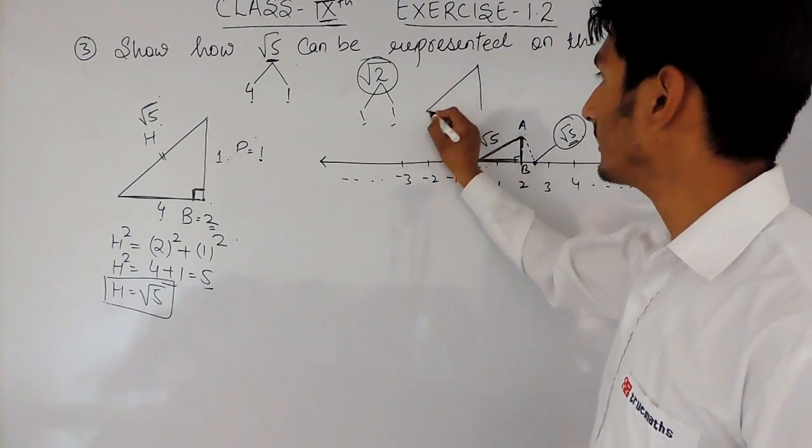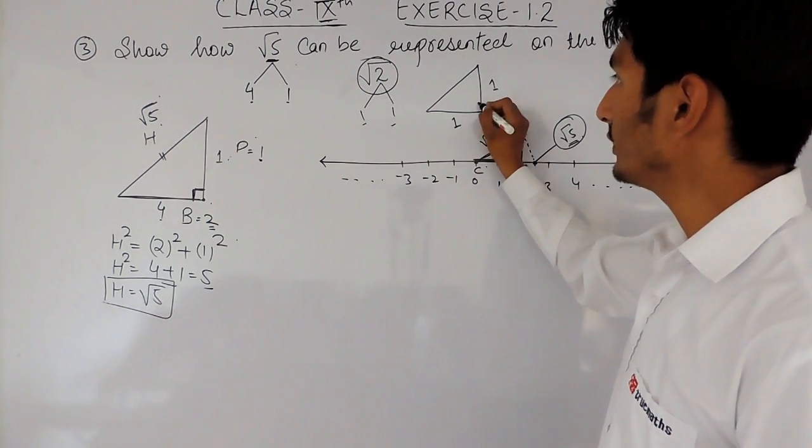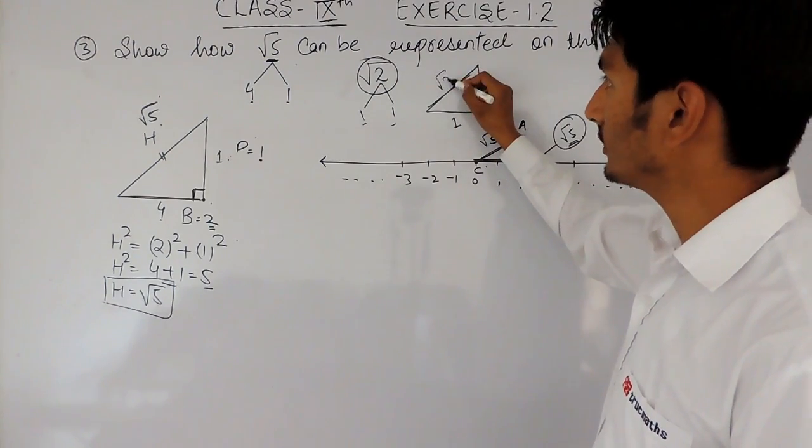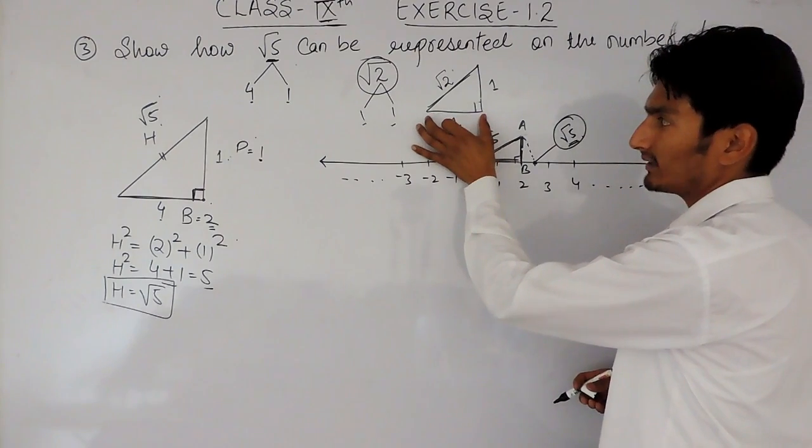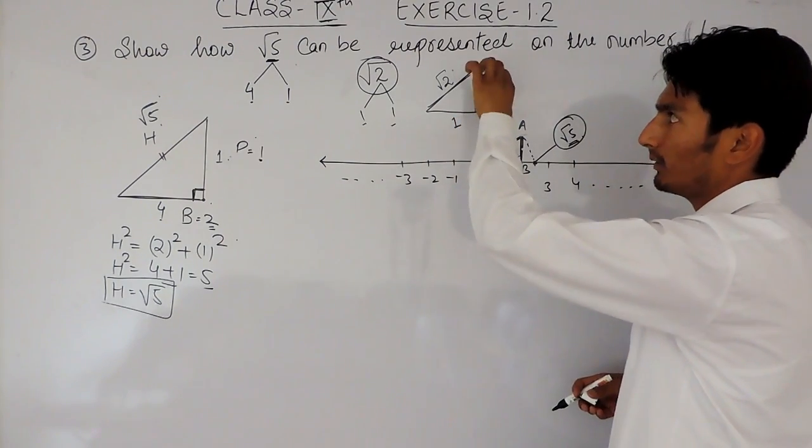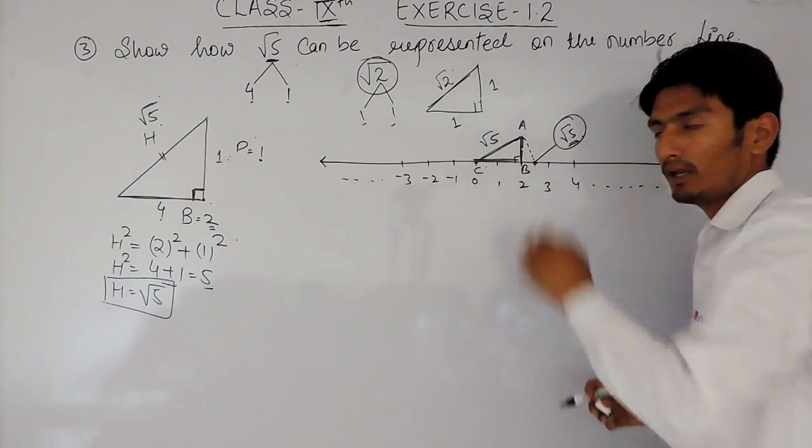if I draw a right-angle triangle, and if this is 1 and this is 1, using Pythagoras, the hypotenuse will be root 2. Because, this is base square, this is 1 square is 1, perpendicular square, 1 square is 1 and that will be the sum of these two, that is root 2. Now,